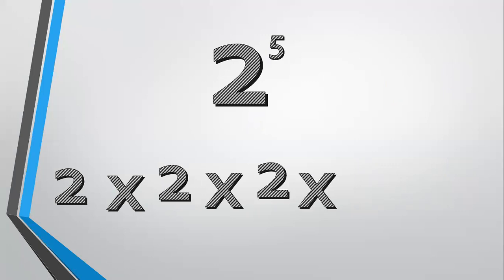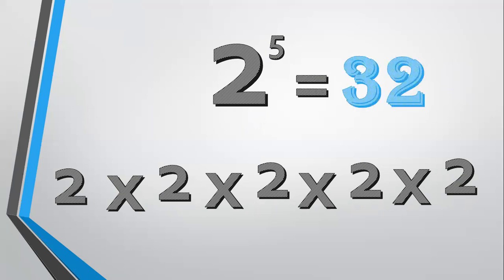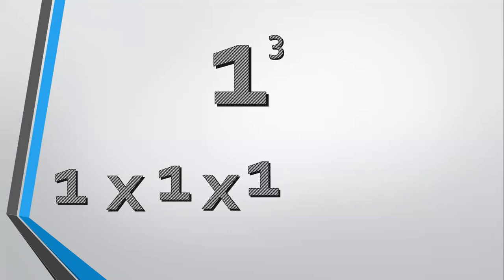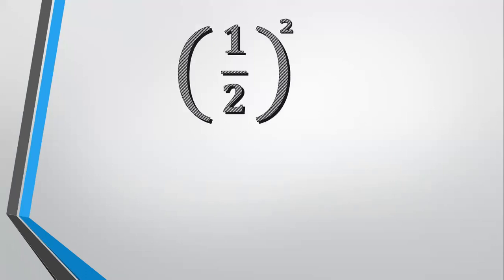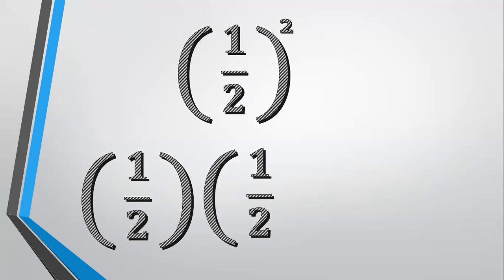2 to the fifth power means 2 times 2 times 2 times 2 times 2. 2 times 2 equals 4, 4 times 2 equals 8, 8 times 2 equals 16, 16 times 2 equals 32. Now, 1 half squared means 1 half times 1 half times 1 half — 1 times 1 times 1 times 1 equals 1.